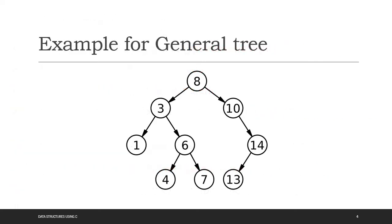Here is a general tree example. This is an example of a general tree. This node is the root node. Other nodes at the bottom we can call leaf nodes or terminal nodes. For example, nodes with data values 3, 10, 6, and 14 are non-terminal nodes.